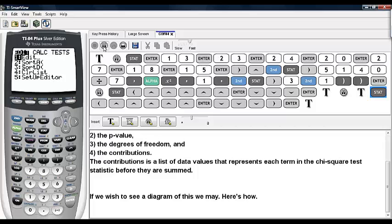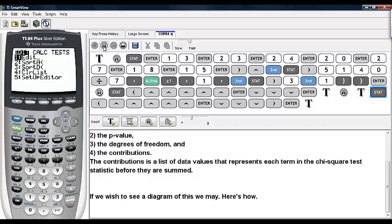If you want to see a diagram of this, here's how. Hit STAT, highlight TESTS, and go back to chi-square goodness of fit. Scroll down to the bottom, highlight DRAW, and hit ENTER.